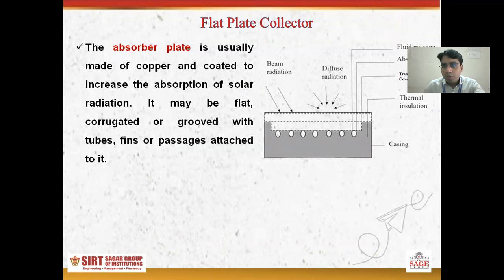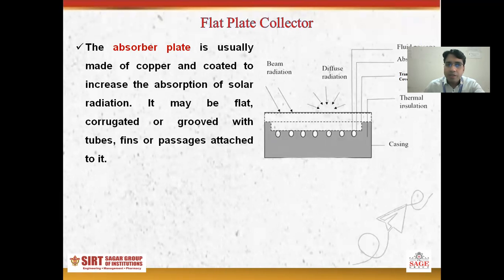The first component is the absorber plate. The absorber plate is usually made of copper and coated to increase the absorption of solar radiation. It may be flat, corrugated, or grooved, with tubes, fins, or passages attached to it.